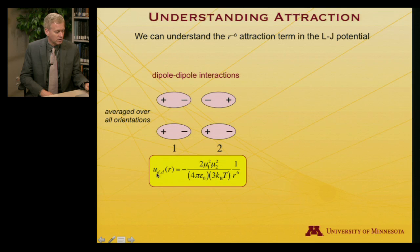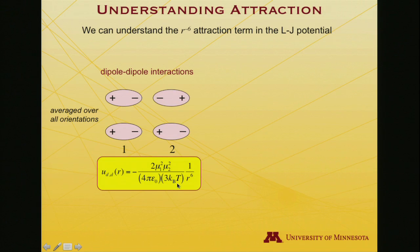The two dipoles are in fact tumbling with thermal energy, and as a result we have to average over the many different accessible orientations. When one does that averaging, one discovers that the potential of interaction depends on the square of the two individual dipole moments. Temperature plays a role because it causes these dipoles to tumble, and then here's the R to the minus 6 dependence. This term is the permittivity of free space.